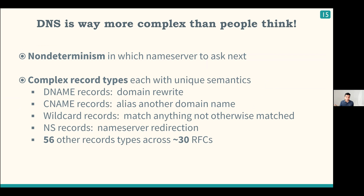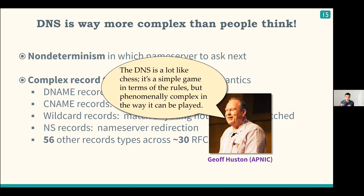DNS is significantly more complex than people realize — it is essentially a very complex string rewriting system. There are two sources for this complexity: first, there is non-determinism in DNS, as in the previous example there was another execution that went to a different name server. Second, there are complex record types like DNAME and CNAME with different kinds of rewrites, aliasing, wildcards, and about 60 other kinds of records spanning about 30 RFCs. As someone said, DNS is a lot like chess — simple in terms of rules, but phenomenally complex in the way it can be played.